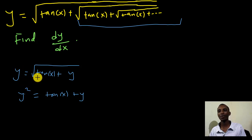If I square here, I get y squared. If I square here, I get rid of the square root. So I have y squared equals tan x plus y. Let's collect like terms together here. So we have y squared minus y equals the tan of x.